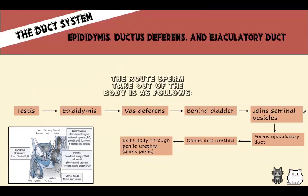Now let's talk about the duct system. The male reproductive system includes the epididymis, ductus deferens (vas deferens), and ejaculatory duct. The route sperm takes is: from the testes → epididymis → vas deferens → behind the bladder → joins the seminal vesicle to form the ejaculatory duct → passes through the prostate → opens into the prostatic urethra → continues into the penile urethra → exits at the tip of the glans penis.